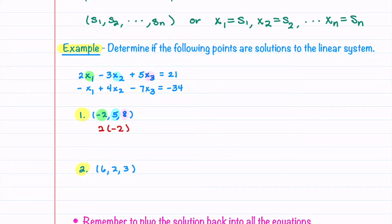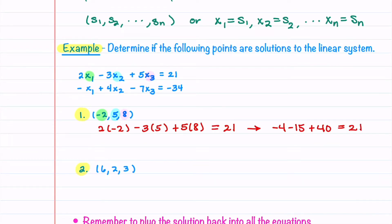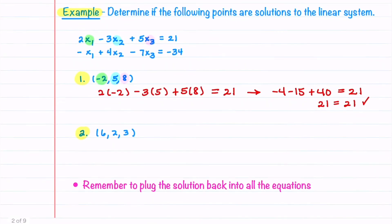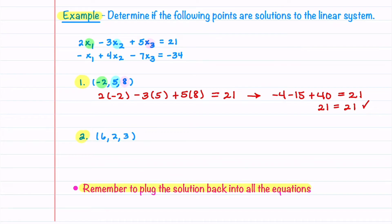We compute 2 times (−2), minus 3 times 5, plus 5 times 8, and check if it equals 21. This gives us −4 minus 15 plus 40 on the left and 21 on the right, which agrees. We also plug −2, 5, and 8 into the second equation and get −34 on both sides. Since both equations check out, (−2, 5, 8) is a solution to the linear system.